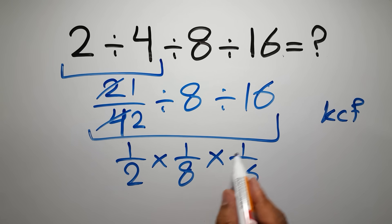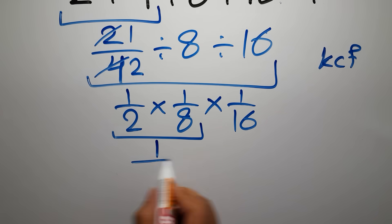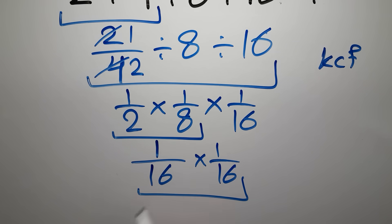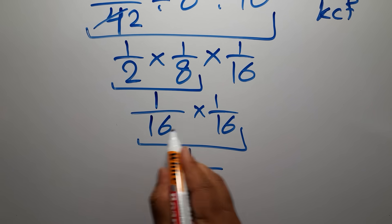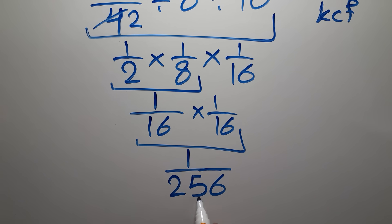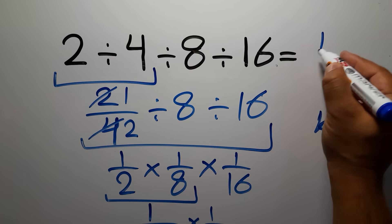So we have 1 over 2 times 1 over 8 times 1 over 16. 1 times 1 gives us 1, and 2 times 8 is 16, so 1 over 16 times 1 over 16. 1 times 1 gives us 1, and 16 times 16 equals 256. So we have 1 over 256, and this is our final answer.